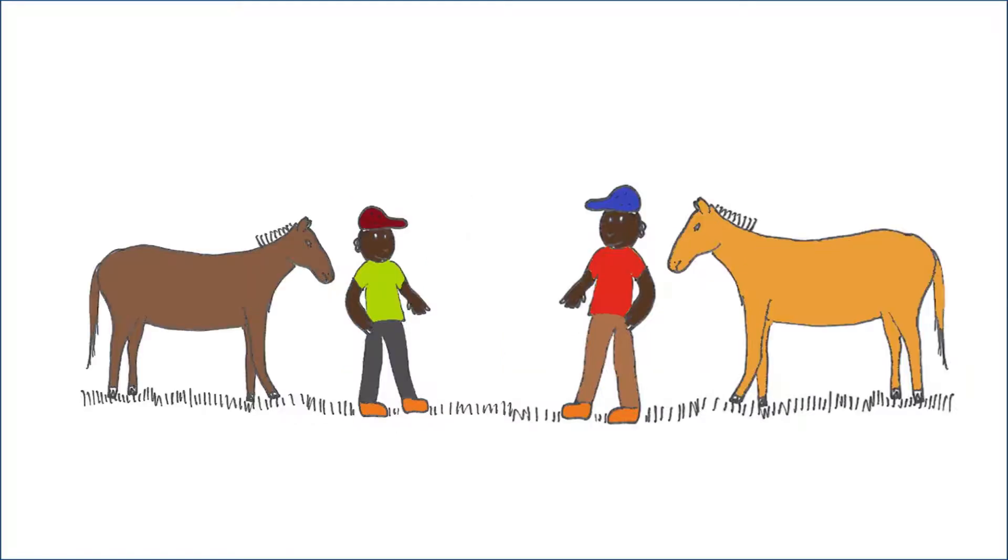Jabu, Sipo said, guess what we've just seen on the farm. What, a snake? said Jabu. And Sipo responded, no, we saw some blue cranes.